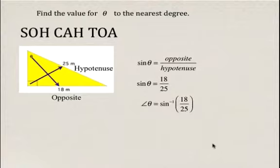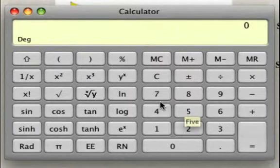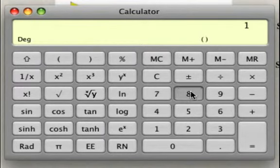It's important that you know how to use the calculator to do this. The best way is to use brackets. So we're going to put bracket 18 divided by 25.